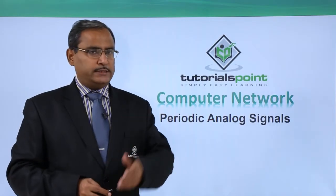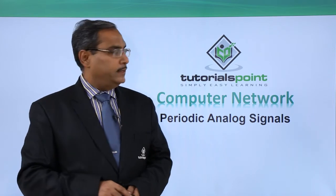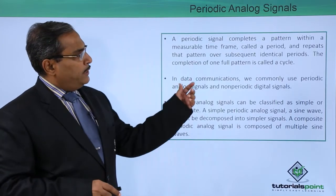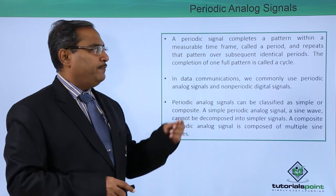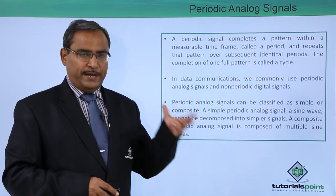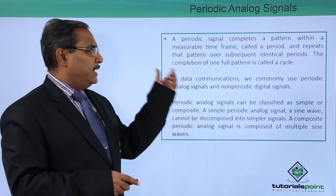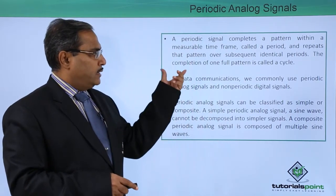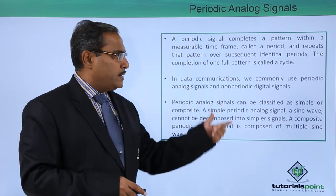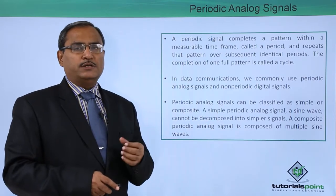In this video, we are going to discuss periodic analog signals. A periodic signal completes a pattern within a measurable time frame, also known as the period, and repeats that pattern over subsequent identical periods. The completion of one full pattern is called a cycle.